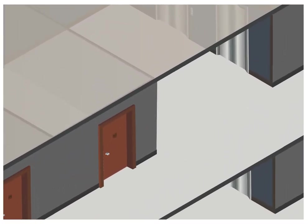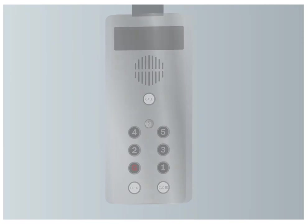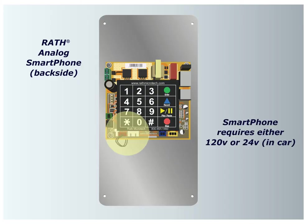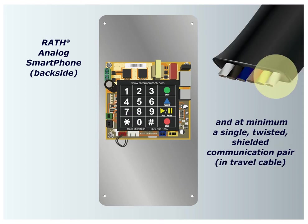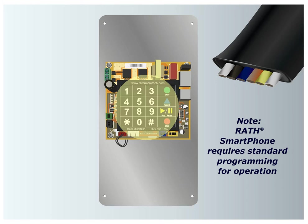Here's an example of an in-car 2100-Series analog phone. Step 1: the analog phone requires either 120-volt or 24-volt power and, at minimum, a single twisted shielded communication pair in the travel cable. The phone line and connections are sent through the travel cable. The phone requires standard programming for operation.